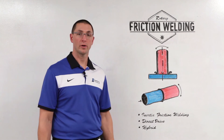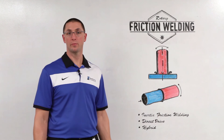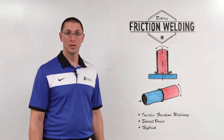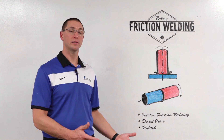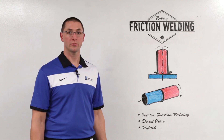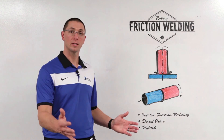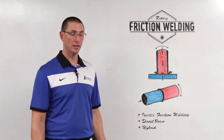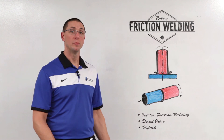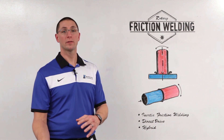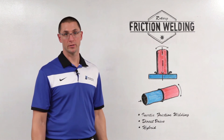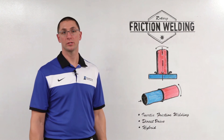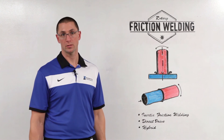The hybrid friction welding process uses the best of both inertia and direct drive. You have the constant energy side of the direct drive process where you're driving using the electric motor and adding energy to the beginning of the process, but then you end with the flywheels and a fixed stored energy amount. This helps you solve some of your more challenging joining applications.